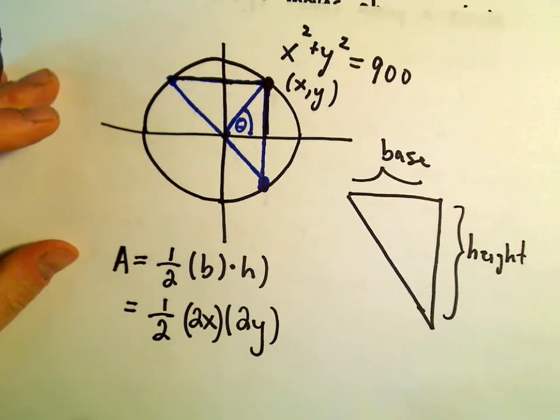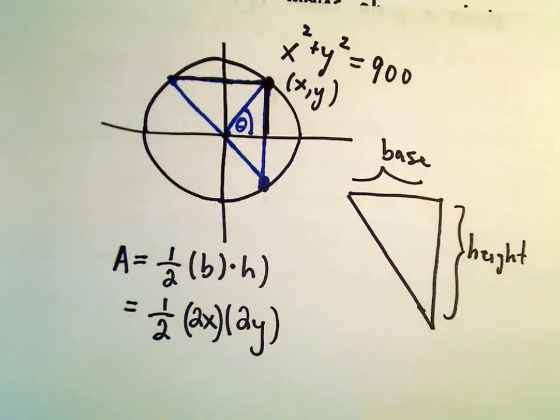Okay, so now we've got that the area is one-half the base times the height. The last thing we need to do is express x and y in terms of theta.